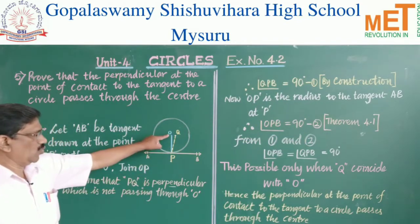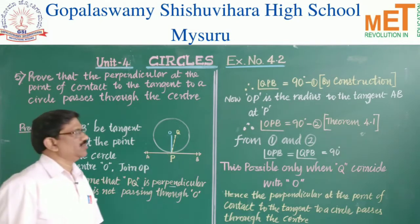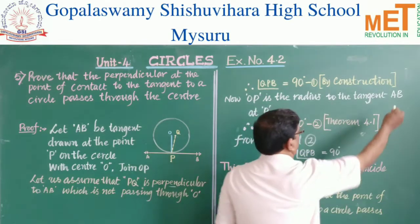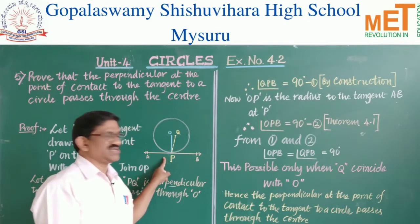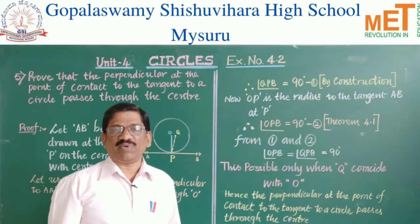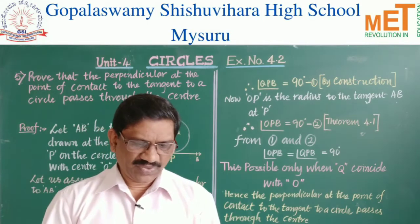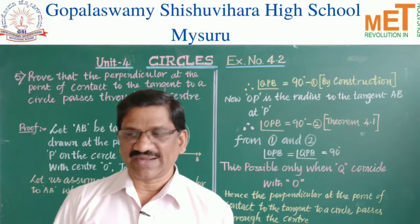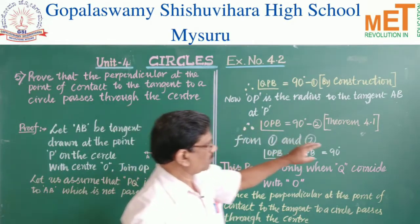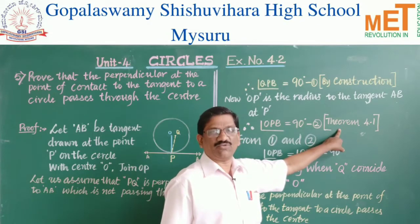Now, OP is the radius to the tangent AB at the point of contact P. According to Theorem 4.1, the tangent at any point of a circle is perpendicular to the radius through the point of contact. Therefore, angle OPB is equal to 90 degrees. Let this be equation two.